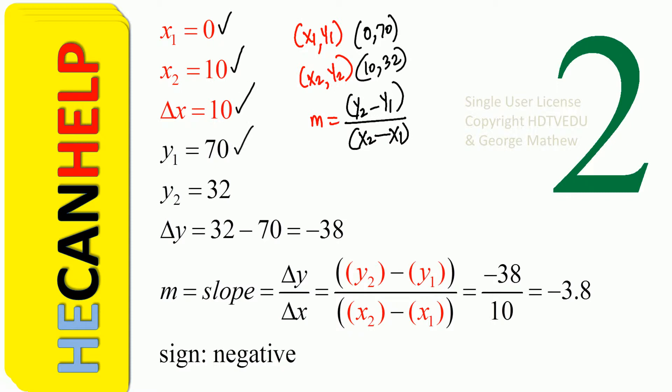We have y1, we have y2. That gives us change in y, y2 minus y1. What is slope? Change in y over change in x. Change in y is negative 38. And change in x is 10. So you get negative 3.8. What is the sign? Negative.